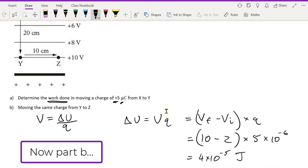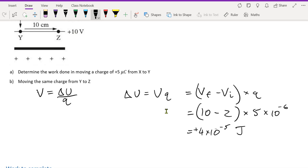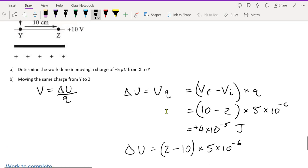So if it's going back, the opposite direction, it would just become, instead of positive, it would be negative. So it's 2 minus 10 times 5 times 10 to the negative 6. So this is called on the field. And this is called... What's the opposite of on the field? Work done by the field. The field's doing the work for us.